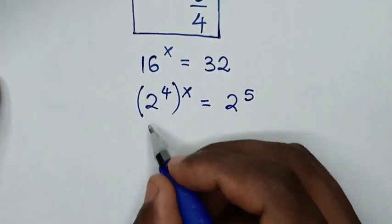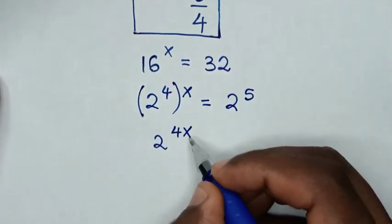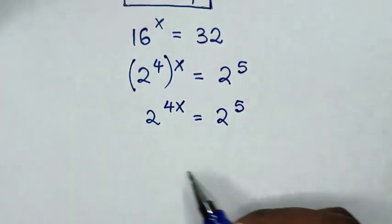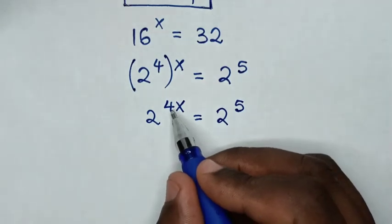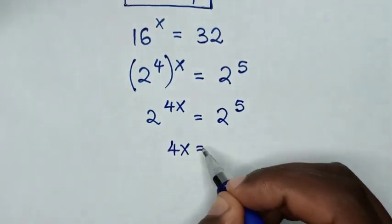Then it will be 2 power of 4 times x is power of 4x, is equal to 2 power of 5. Then because we have same base of 2, we will compare the powers, so it will be 4x is equal to 5.